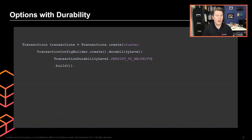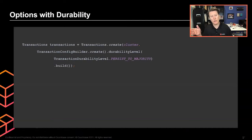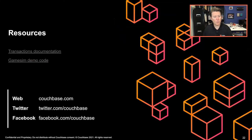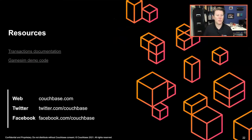Couchbase also offers a higher level of isolation: MAV (monotonic atomic view) isolation. MAV isolation ensures that if your transaction sees part of a committed transaction, it will see all of those committed changes — so if another actor is changing things and your logic depends on those changes, you won't be caught partway between transactions. Thank you for sticking through part one. We have links to the transactions documentation and the game sim demo code. Look for part two, where we'll show some of this in action in demonstrations.